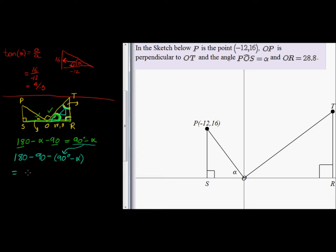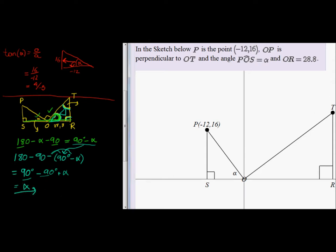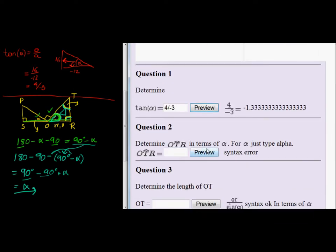So 180 minus 90 gives me 90 degrees minus 90 degrees. Negative, negative gives me positive Alpha. And 90 minus 90 is zero. So I'm just left with Alpha. OTR in terms of Alpha is just Alpha. So OTR is equal to Alpha.